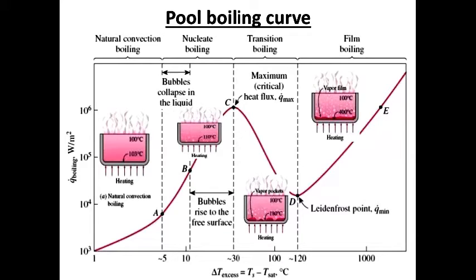In region B to C, the heater temperature is further increased, and bubbles form at such great rates at such a large number of nucleation sites that they form continuous columns of vapor in the liquid. These bubbles move all the way up to the free surface where they break up and release their vapor content. The large heat fluxes obtainable in this region are caused by the combined effect of liquid entrainment and evaporation.